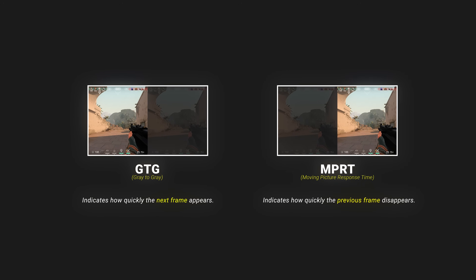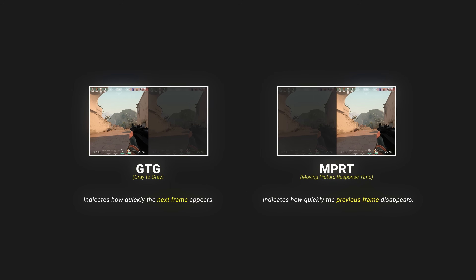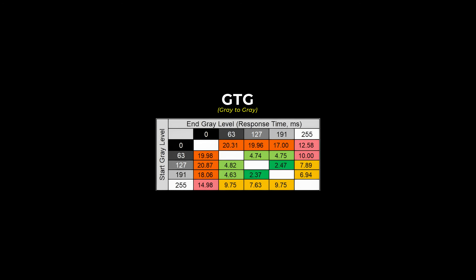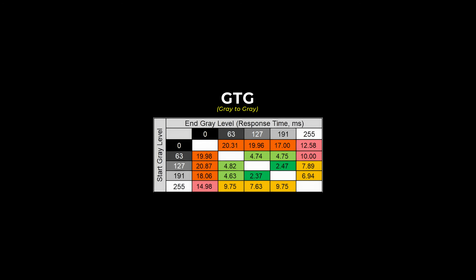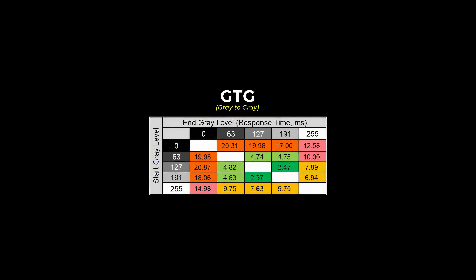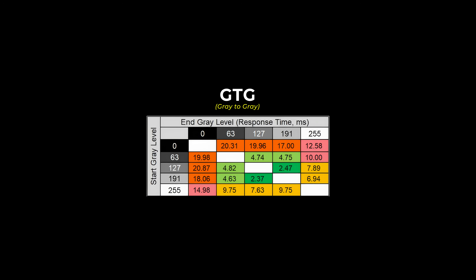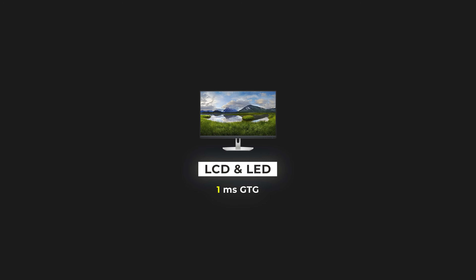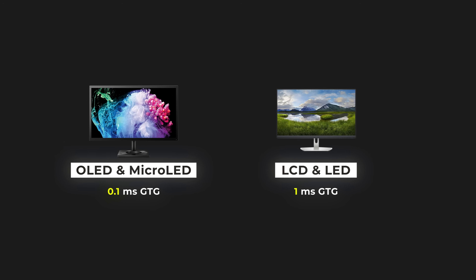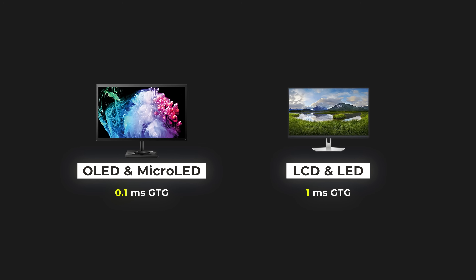The high MPRT response time of your expensive monitor may affect your experience negatively. If you don't want to spend too much on a monitor, you need to know the importance of these two things. Gray to gray means how long it takes for a pixel to go from one gray level to the next — how quickly one frame is rendered after another. Most LCD panels have some latency in this area, while OLED and micro-LED panels have a faster response time due to their panel design.